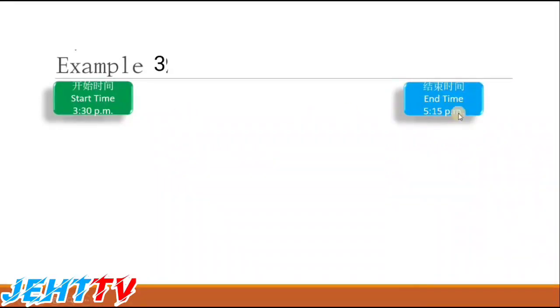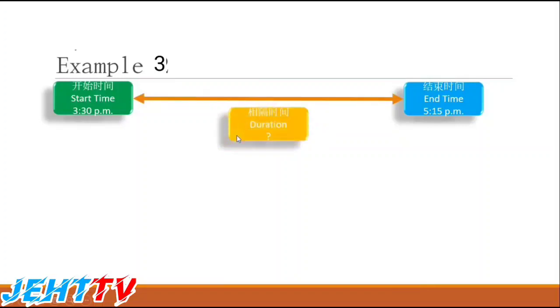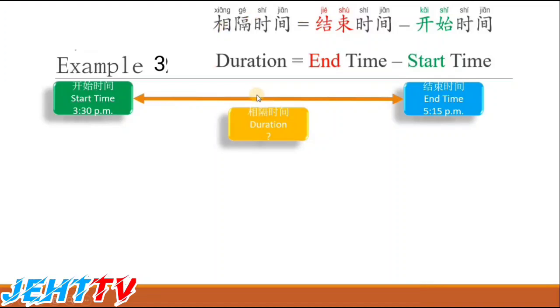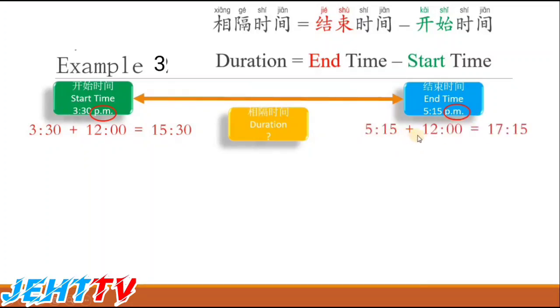Now we look at Example 3. The start time is 3:30 p.m. and the end time is 5:15 p.m. Don't forget the formula: duration equals end time minus start time. Both times are p.m., so we add 12 hours to each. 3:30 plus 12 equals 15:30, and 5:15 plus 12 equals 17:15.